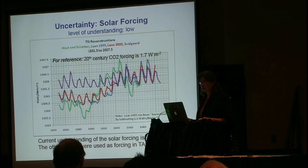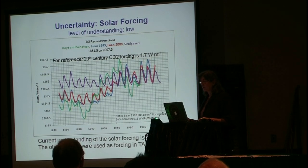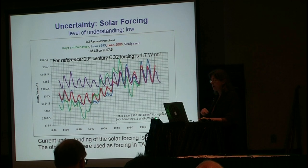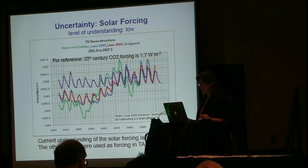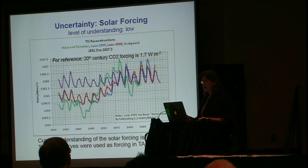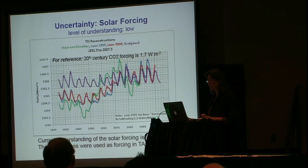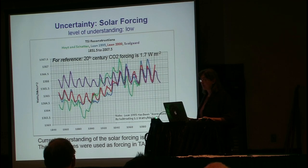In terms of solar forcing, if you look at what was used in the third and fourth assessments — the green, blue, and red curves — you see natural variability and generally of interest between 1900 and 1940 there was an increasing trend. Our current best understanding is that there was no secular increase during this period, as represented by the purple curve. However, the climate model simulations for both the third and fourth assessments used those earlier curves. The uncertainty ranges at many times exceed 1 watt per meter squared. For reference, 20th century CO2 forcing is 1.7 watts per meter squared. The IPCC has classified the uncertainty associated with solar forcing as low.